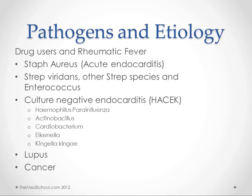Strep viridans, which you get from the mouth, and other Strep species — many of them from the skin — as well as Enterococcus. If you have no positive blood cultures but all of our other Duke criteria suggest we have endocarditis, then we want to start looking at the HACEK organisms. These are the ones that don't show up regularly on a culture — they're hard to culture for.